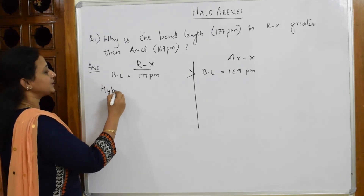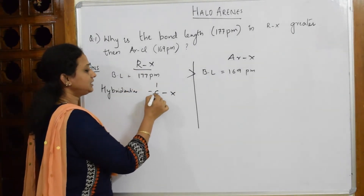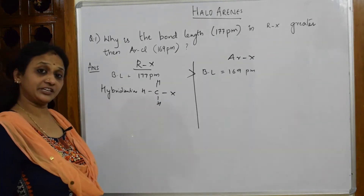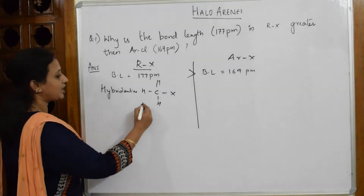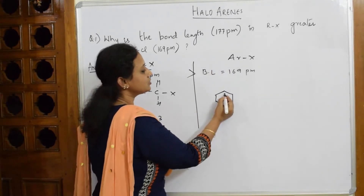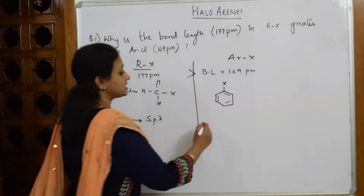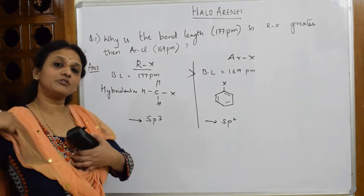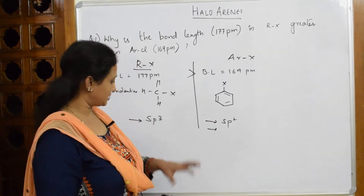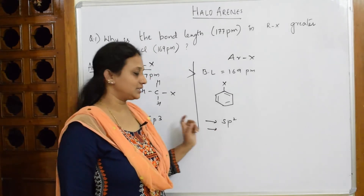When I look at RX — the alkyl halide — with a methyl group and single bonds, the type of hybridization observed is SP3. When I come to aryl halide, that is your benzene ring, which has alternate double bonds, the type of hybridization observed is SP2. Now, which one has more S-character? We find more S-character in SP2 hybridization. So we can already conclude that in SP2, S-character is higher compared to SP3.